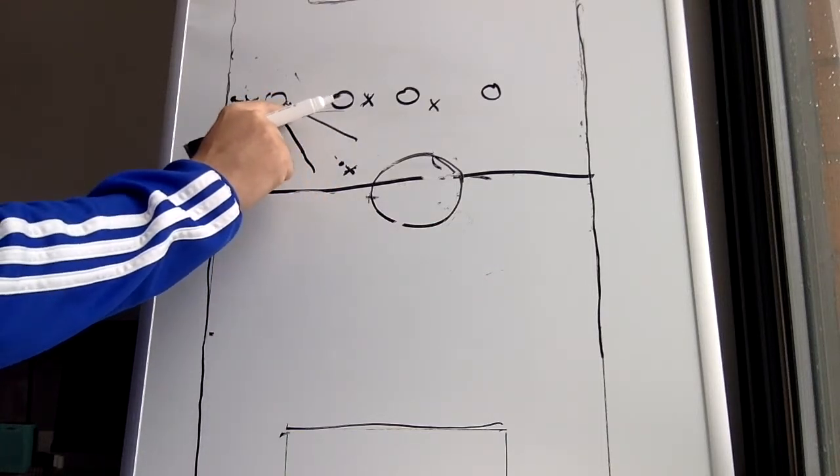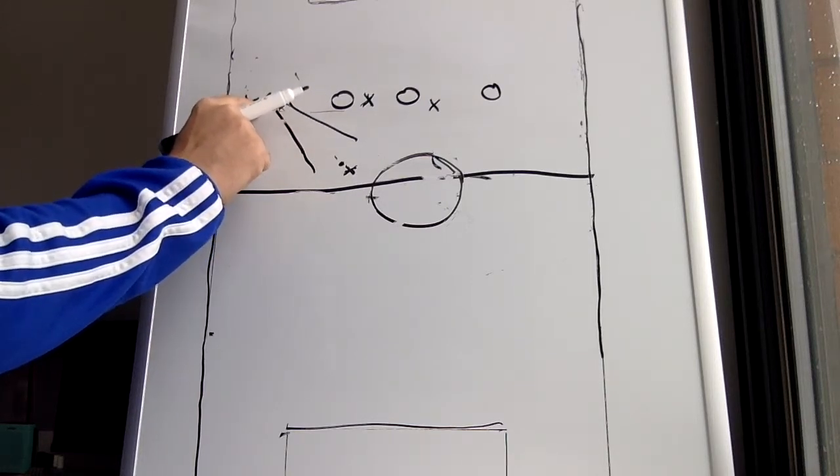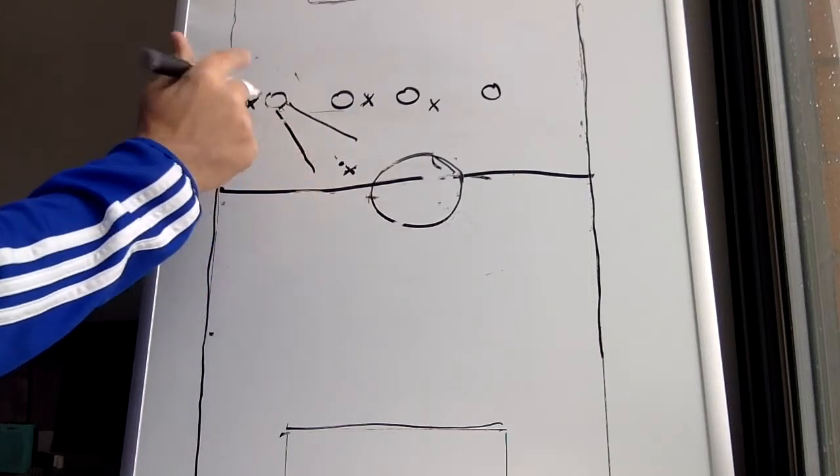This is difficult for him because if he has to now turn his head all the time to see the man, as soon as he turns his head, he can't see the ball. When he's focusing on the ball, he can't see the man.